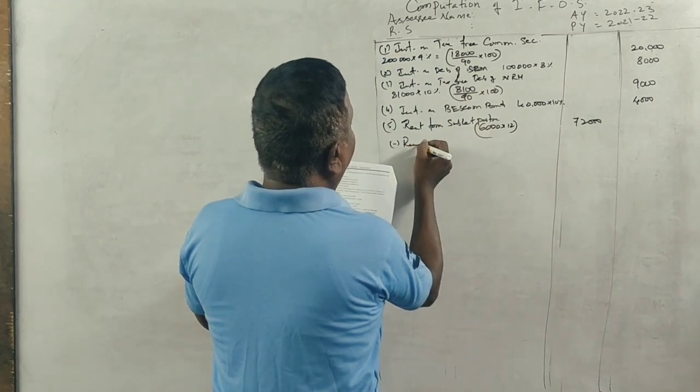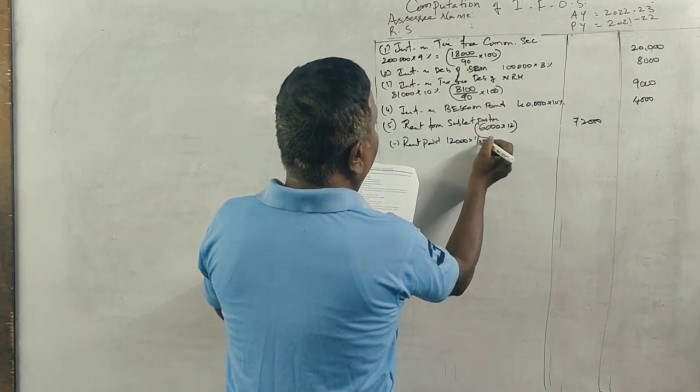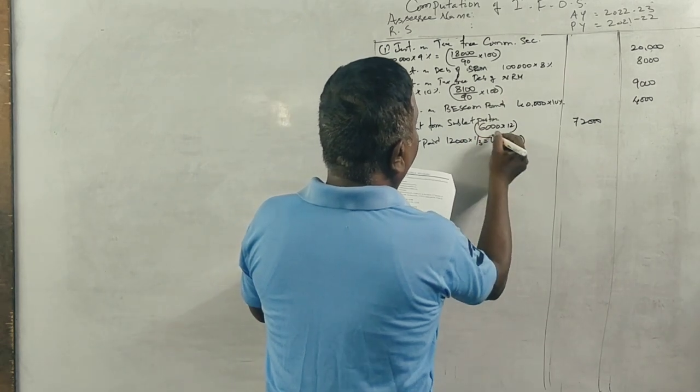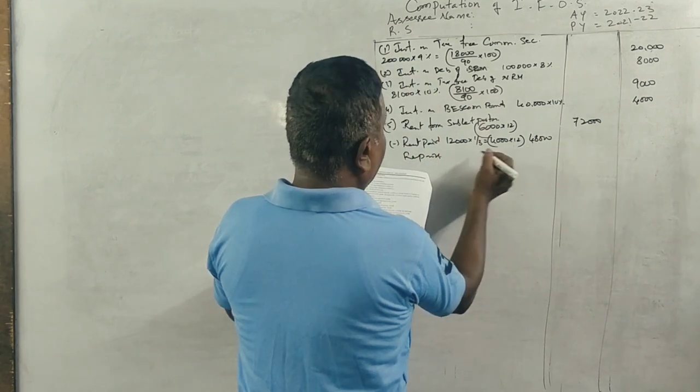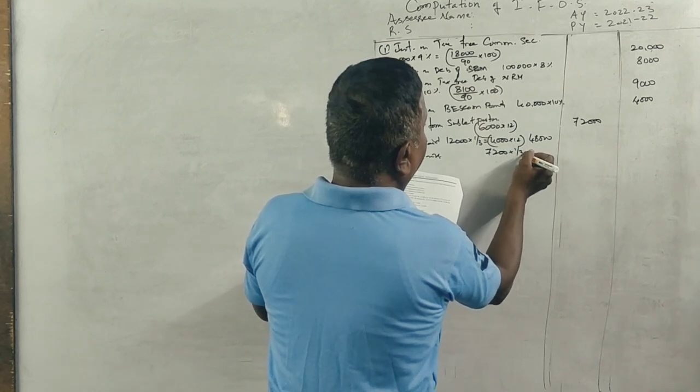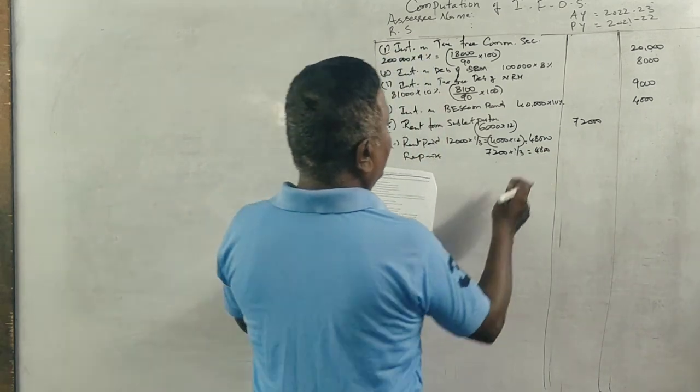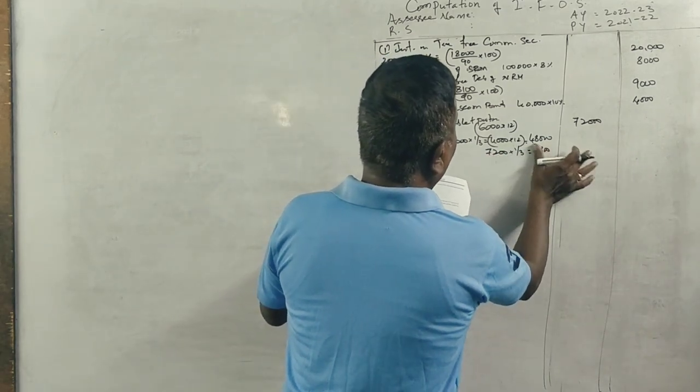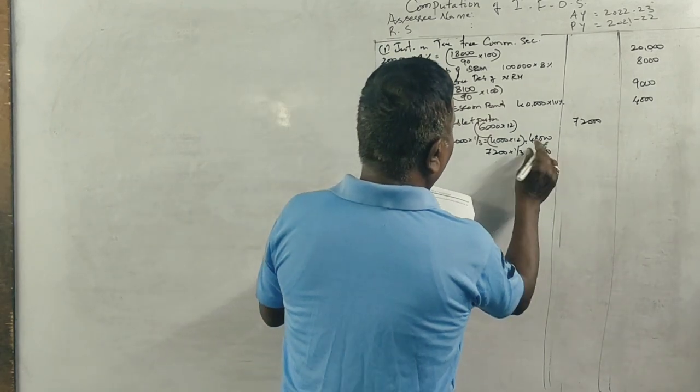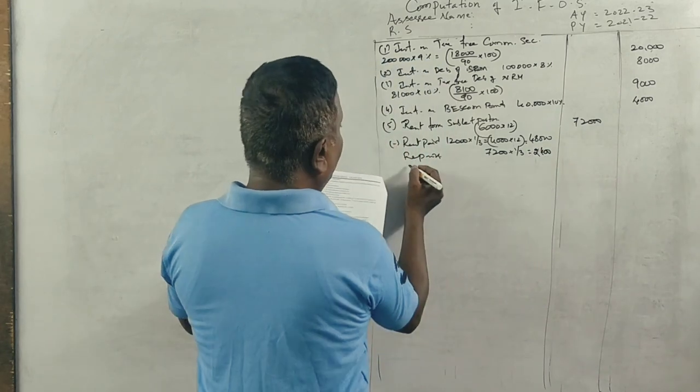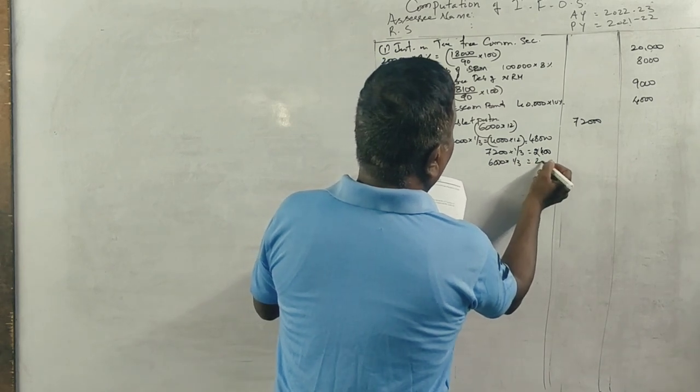Less rent paid for the house. He paid 12,000 rupees, one-third is 4,000 into 12 equals 48,000. For repairs he paid 7,200, one-third is 2,400. Municipal taxes 6,000 into one-third equals 2,000. Total 52,400. Balance is 19,600.